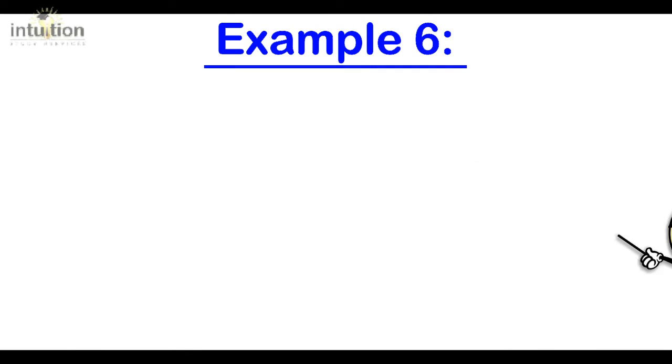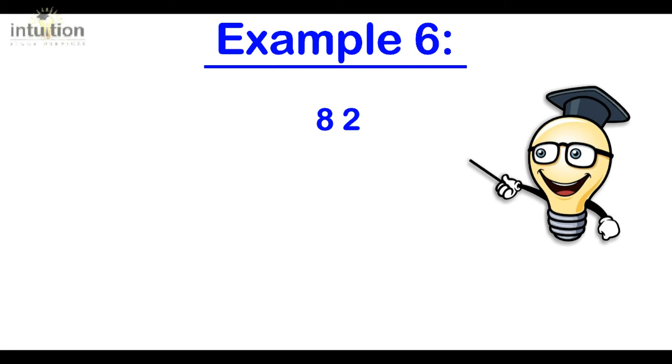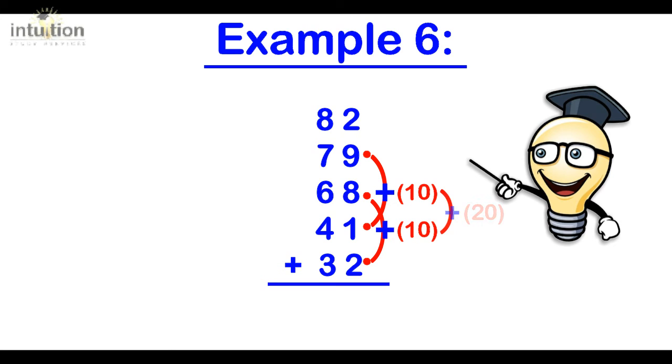Okay, so let's take a look at another example. We have 82 plus 79 plus 68 plus 41 plus 32. Okay, so like before we fix the 82 and then we add the units first. We can notice that the 9 and the 1 complement to make 10 and the 8 and the 2 also complement to make 10. So that totals to 20 which we can add directly to the 82 making 102.